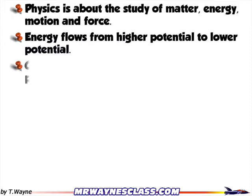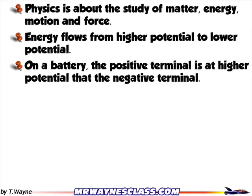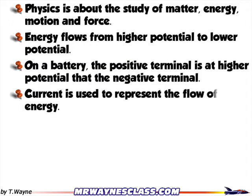On the battery, the high potential is the positive side. The negative terminal is the low potential. So charged carriers deliver energy as they travel from positive to negative. We use those charged carriers to represent the current. In order for current to go from positive to negative, the current must be represented by the flow of positive charges.